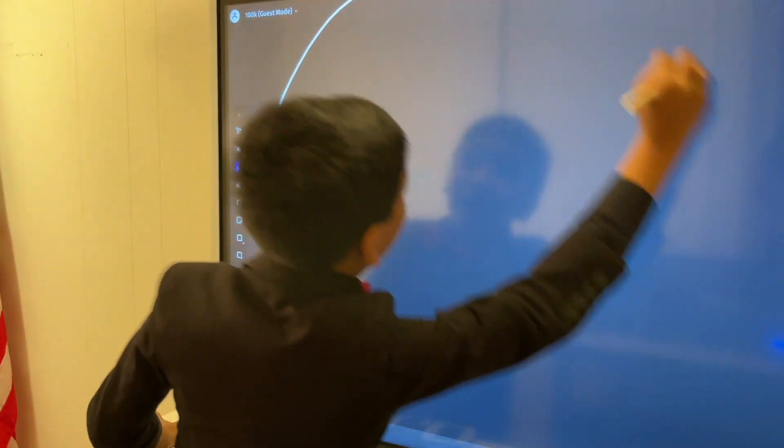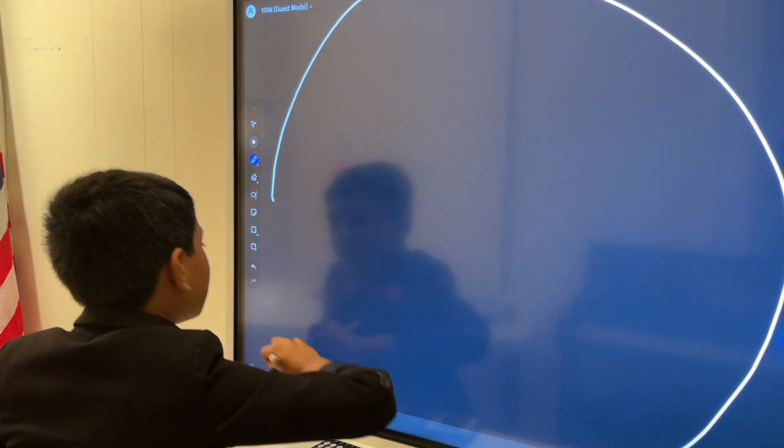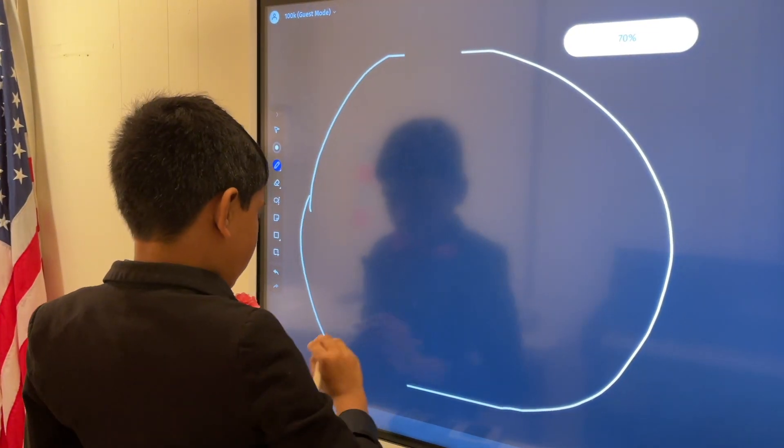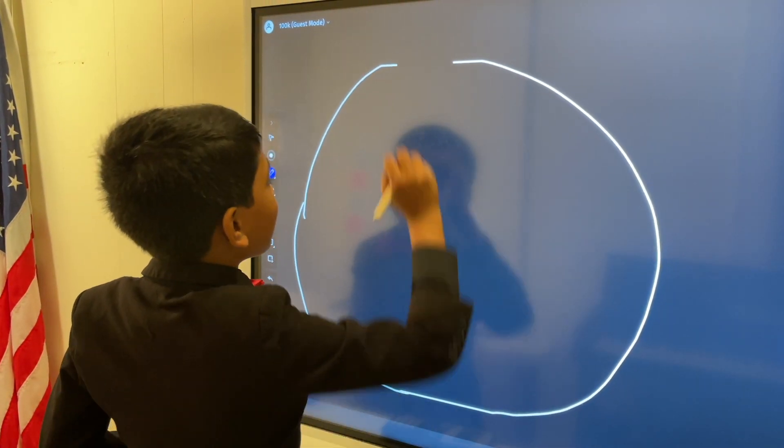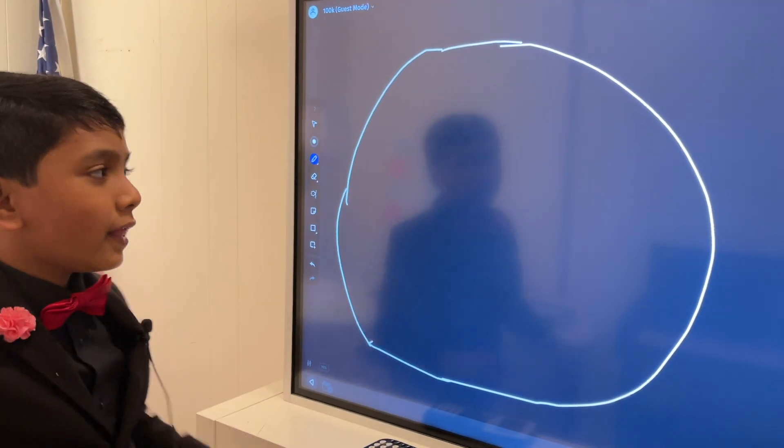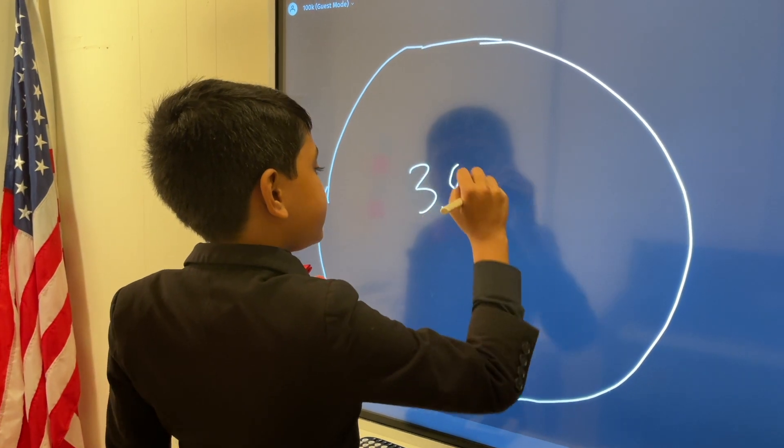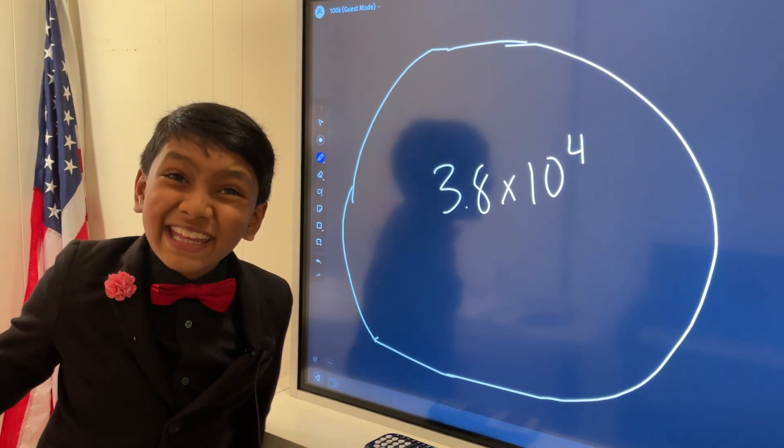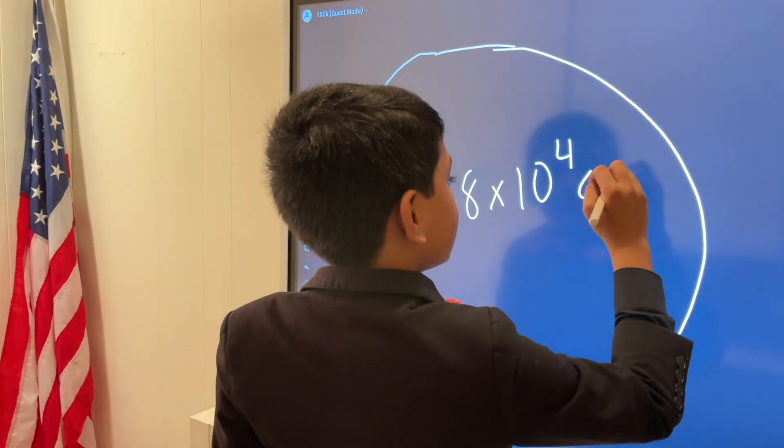Now you have this real big circle, the size of a country or two, and there's some cuts off. And this huge circle is 3.8 times 10 to the 4, and that's just radius. So that's in the centimeters.